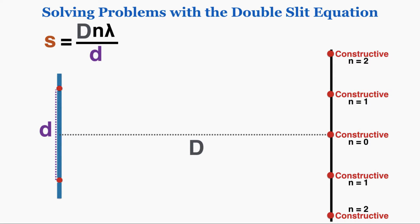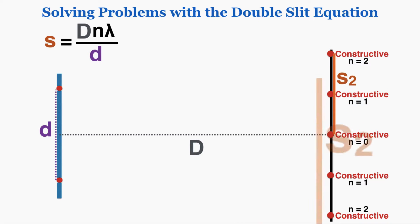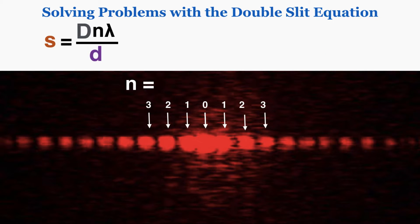S is the distance between points of constructive interference. If we use n equals 1, the s we get is the distance from the central point to the first point of constructive interference. If we use n equals 2, we get the full length to the second point. So s is always measured from that central point to the number of points away equal to n. Looking at an actual double slit diffraction pattern, these are the n values that go with each point.